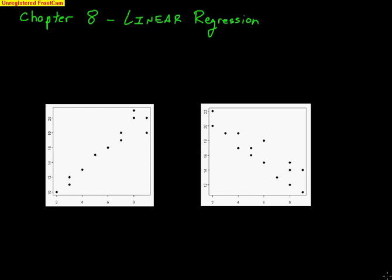Chapter 8 is on linear regression. The idea with linear regression is we want to put a straight line through the data to make predictions of data. If we look at this scatter plot, we only have x and y values for these particular points, but what about an x value that we don't have a point for? We want to try to make a prediction for it — there are no actual values labeled here, but this gives us the idea.